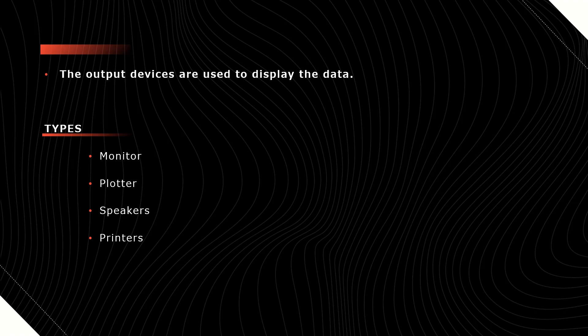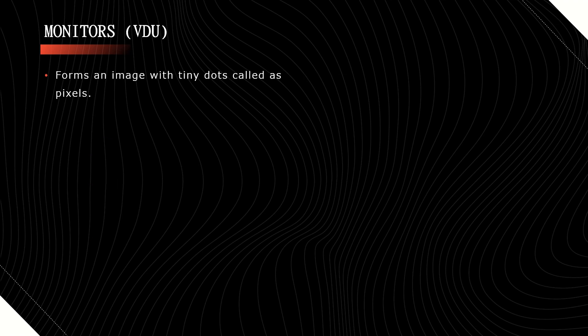In this video, we will discuss about monitors, plotters, and speakers. We also call the monitor as VDU, which means visual display unit. It is a main output device of a computer. It forms an image with tiny dots called pixels, and these are arranged in a rectangular shape.